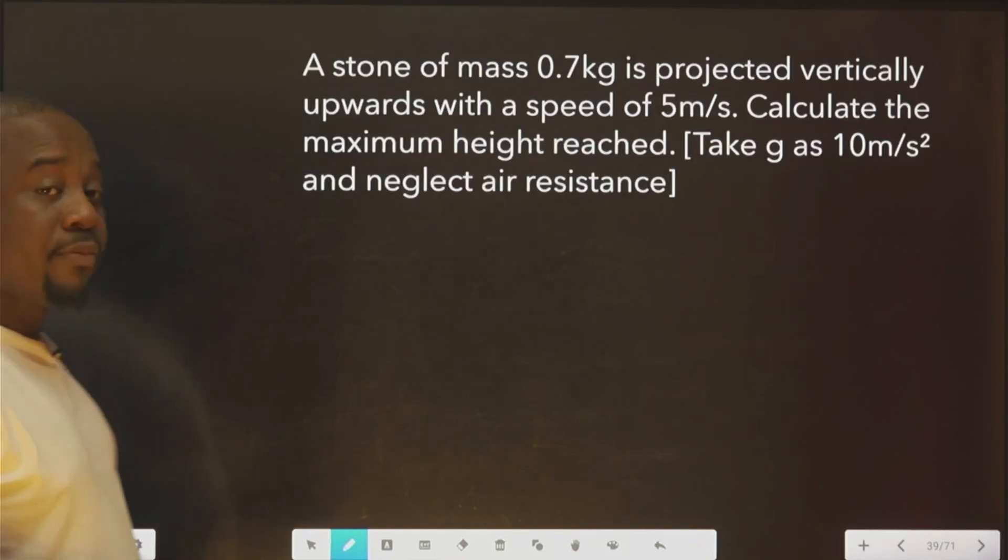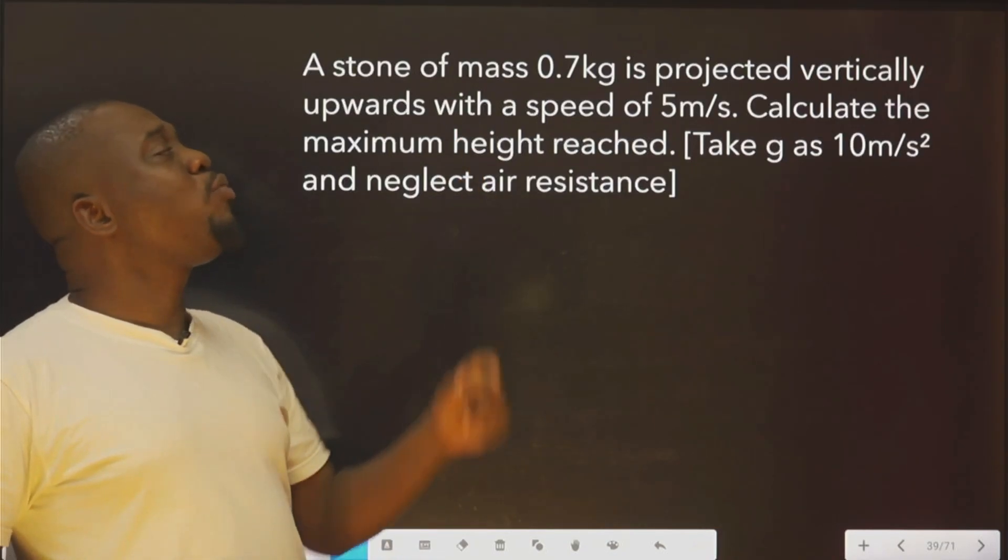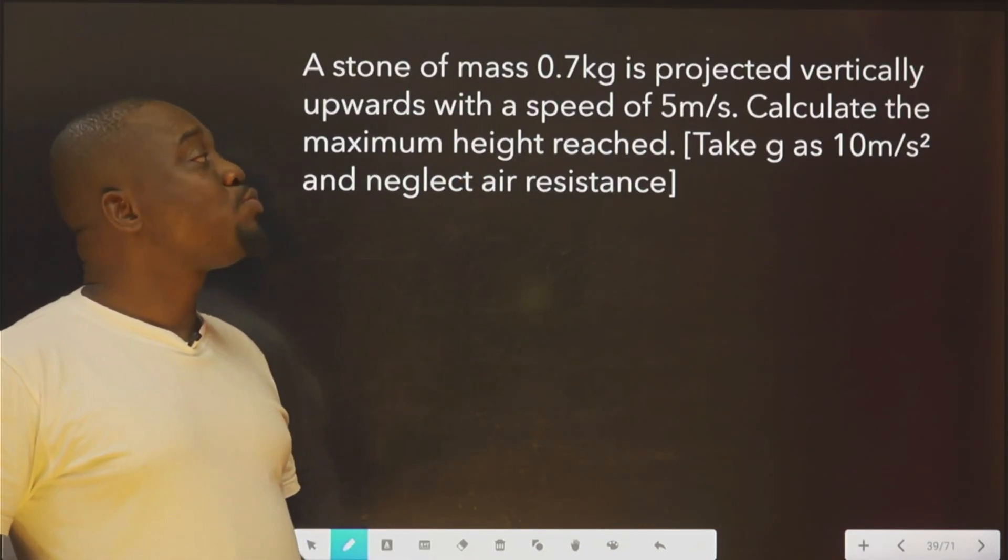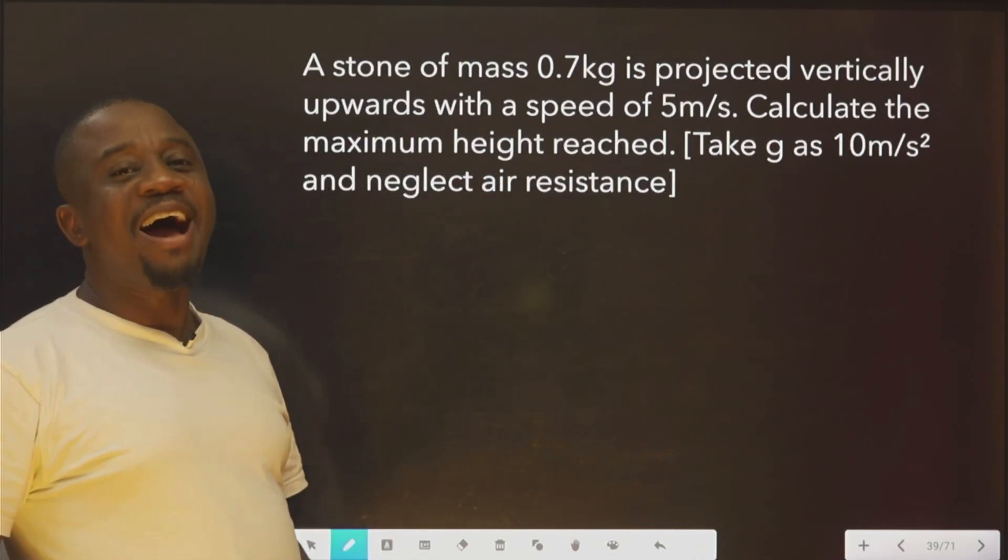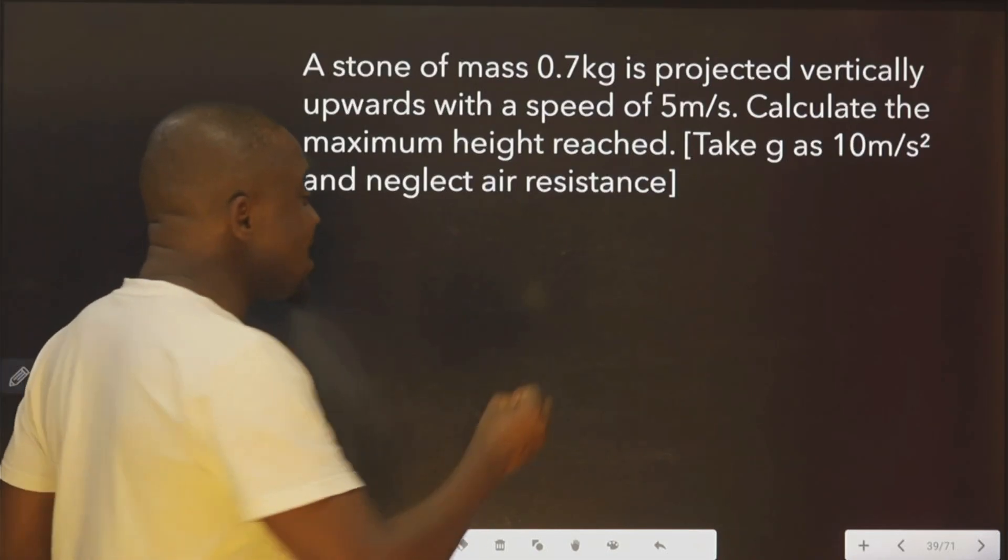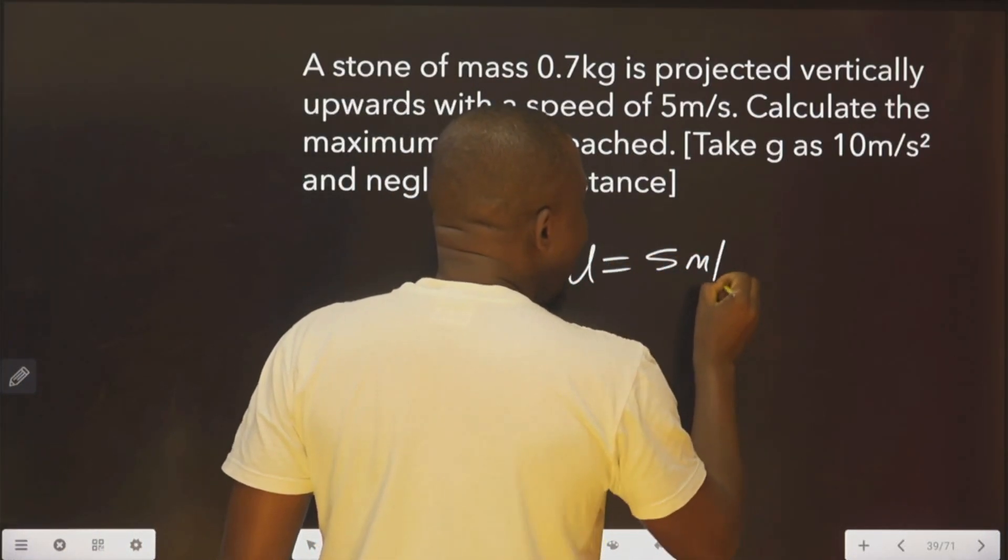Okay, let's look at this. It says a stone of mass 0.7 kg is projected vertically up with a speed of 5 meters per second. That is, the initial speed u is 5 meters per second.